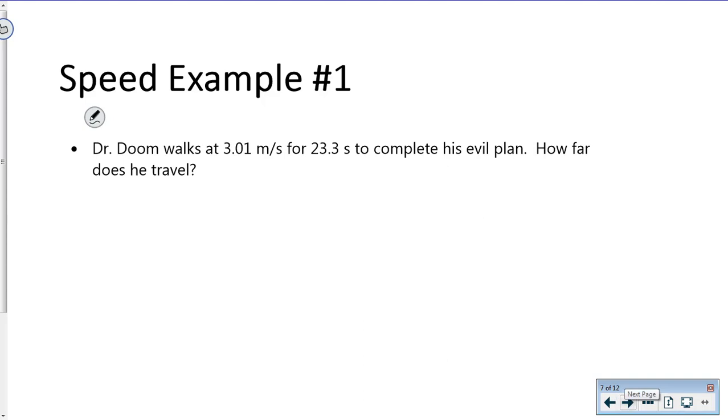Dr. Doom walks at 3.01 meters per second for 23.3 seconds to complete an evil plan. How far does he travel? We have two numbers: 3.01 meters per second tells us we have a speed, and 23.3 seconds is our time. We're looking for the change in distance.